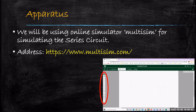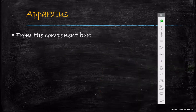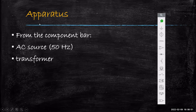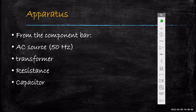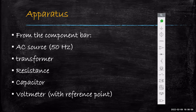We will look at which components we need for this particular experiment. From the component bar shown in the diagram, we will need an AC source of 50 hertz, a transformer, a resistance, a capacitor, and a voltmeter with reference point.